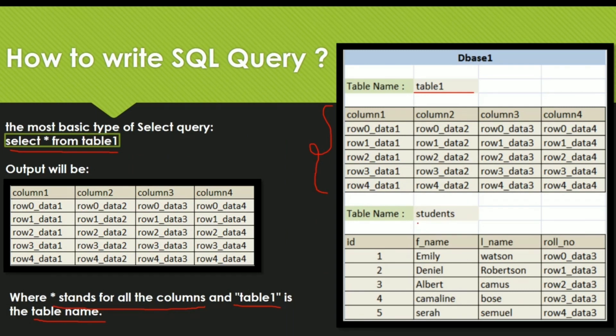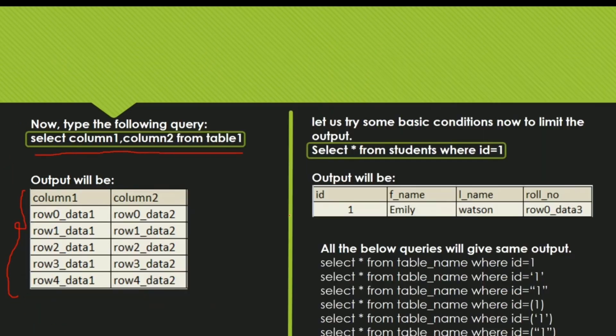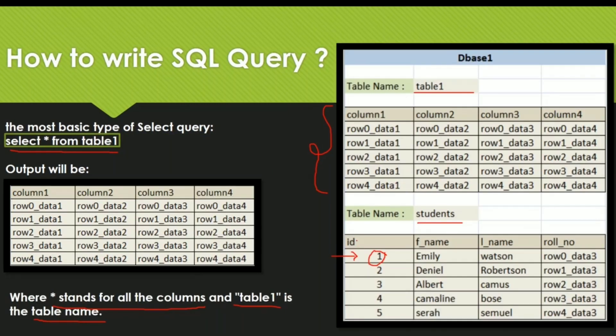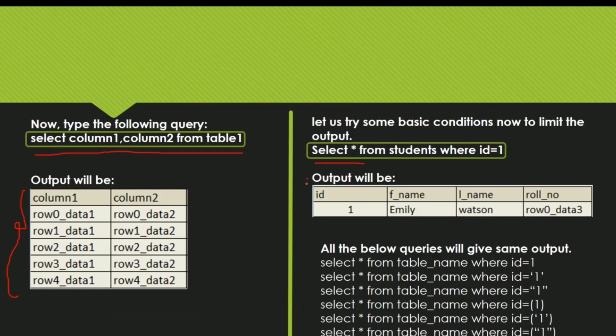Now let's look at table students. If I want to fetch details of a person whose id is equal to 1, what can I write? What query should I use? I will use select star from student where id is equal to 1. This query means that it will select everything from students from this table where id is equal to 1. So it will select everything with id 1 and it will give us this output.